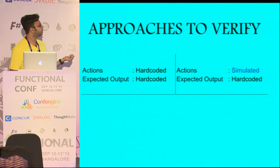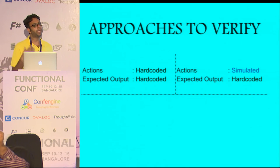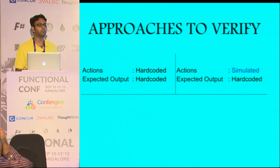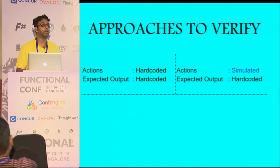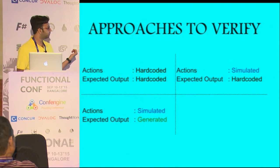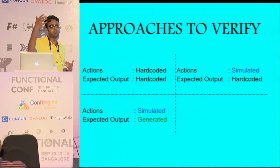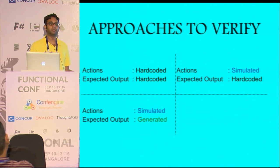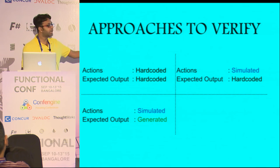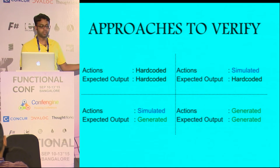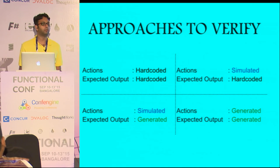Then there is actions being simulated with hardcoded final expected output — say I do these five actions and I know the number of FAQs will always be five, I can hardcode that. And then there is simulated actions with generated expected output, which is the approach I just showed you — there is a simulated set of actions and a model that tells me what I expected to happen, and then I can use it to verify. But there is another level: we generate everything — both the actions and the output.